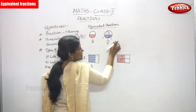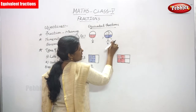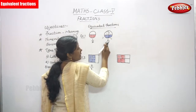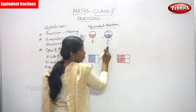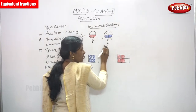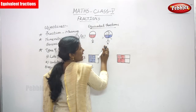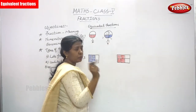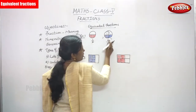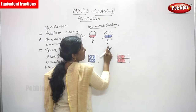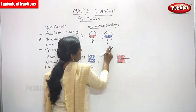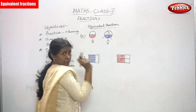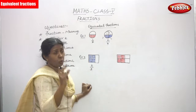I cut the circle into four equal parts, so the total number of parts is 4. From the four parts I shaded only two portions. That is what we have written: 2 by 4 as a fraction.